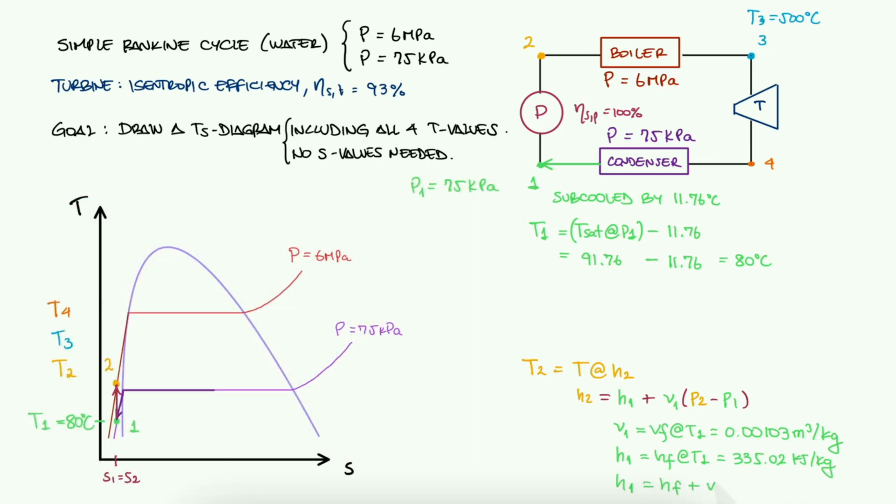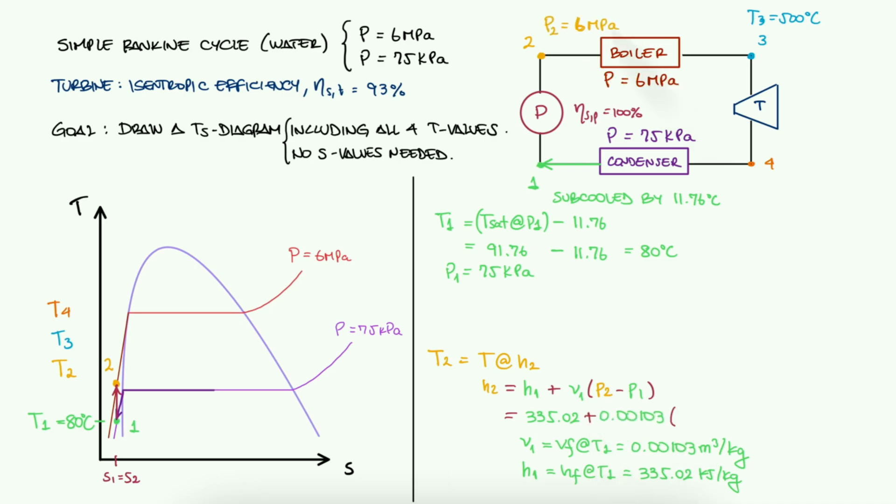Here, we could use the longer and more precise expression, but the number is not going to change much for the purposes of the TS diagram. After substituting these values and finding H2, we can find T2 because since 2 is a compressed liquid, our approximation says H2 should be HF for that temperature. In other words, we're looking for a temperature for which HF is the H2 value.